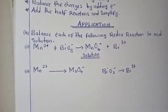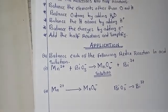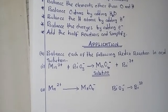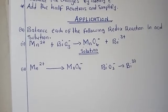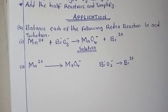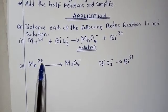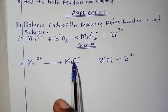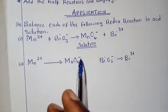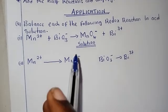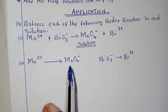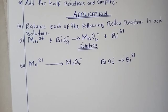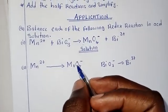The second rule states that we balance the elements other than oxygen and hydrogen. When we check here, we do have oxygen, but we balance any other element apart from oxygen and hydrogen first. Checking manganese: we have one manganese on each side, so manganese is already balanced.